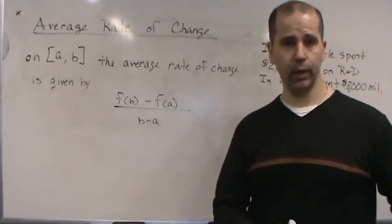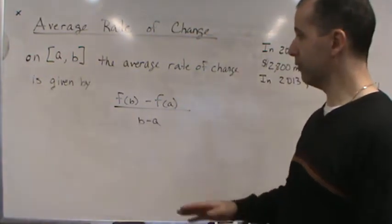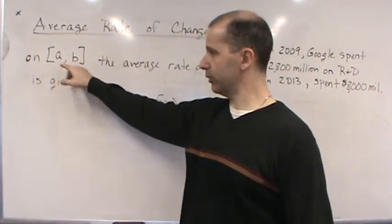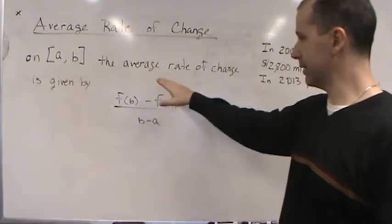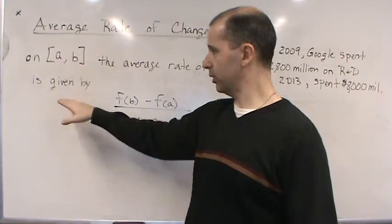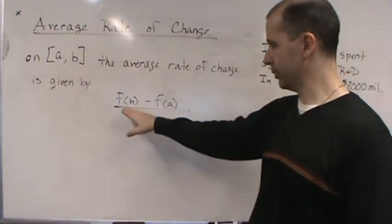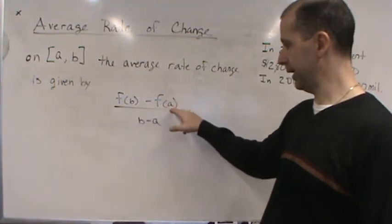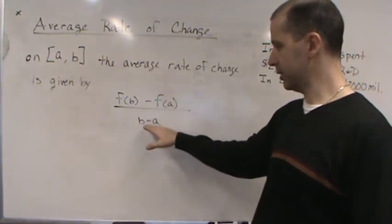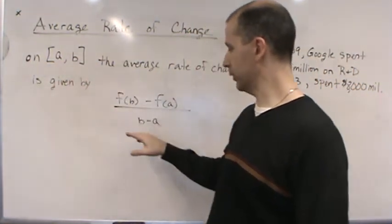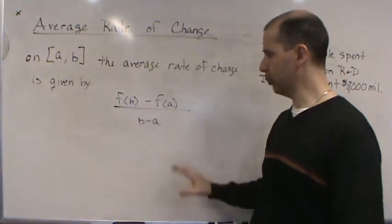In this case, average rate of change on a closed interval from A to B is given by this formula: we take the function evaluated at B minus the function evaluated at A, divided by the difference between B and A, or the length of the interval.